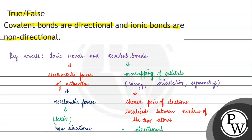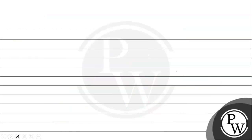The statement says both covalent bonds are directional and ionic bonds are non-directional. The final answer for this question is: this statement is true. I hope you understood it well. Thank you and all the best.